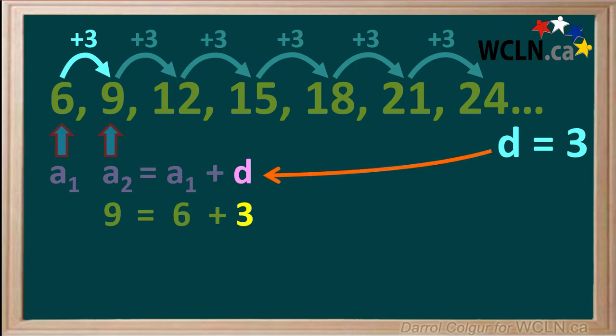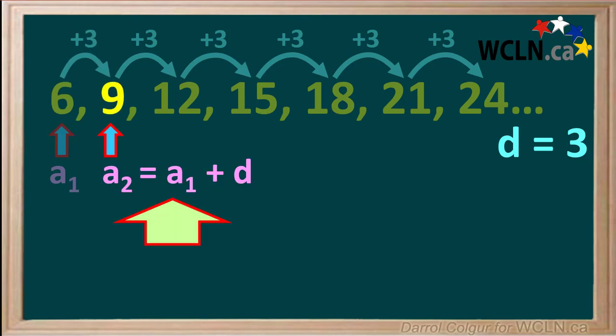And 3 is the common difference d. So we can say that term a2 is equal to a1 plus d. And we'll make a note of it over here.